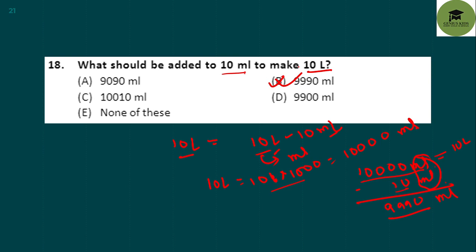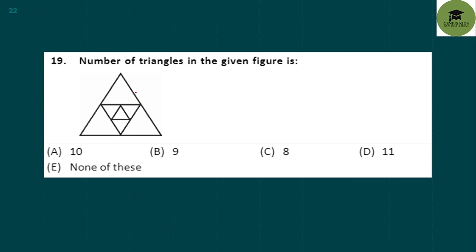Number of triangles in the given figure: counting all triangles — the large one, then smaller ones: 1, 2, 3, 4, 5, 6, 7, 8, 9. There are 9 triangles total. Option B is your correct answer.